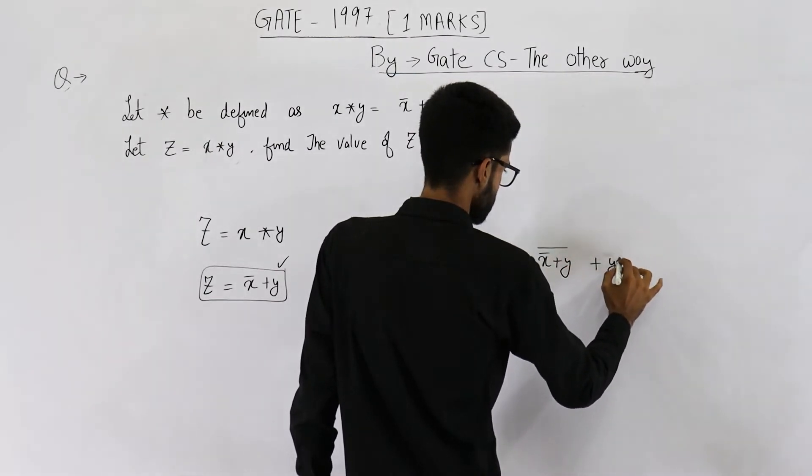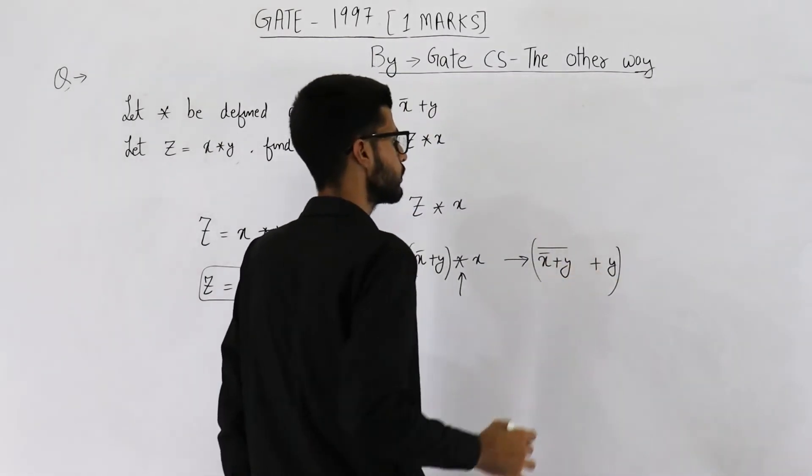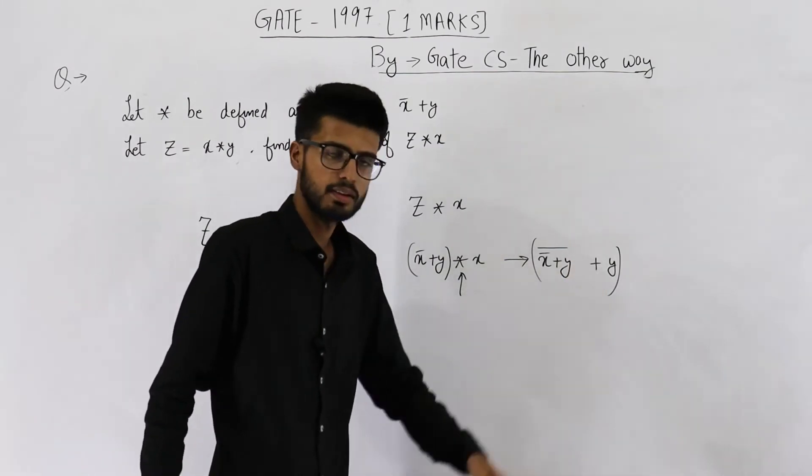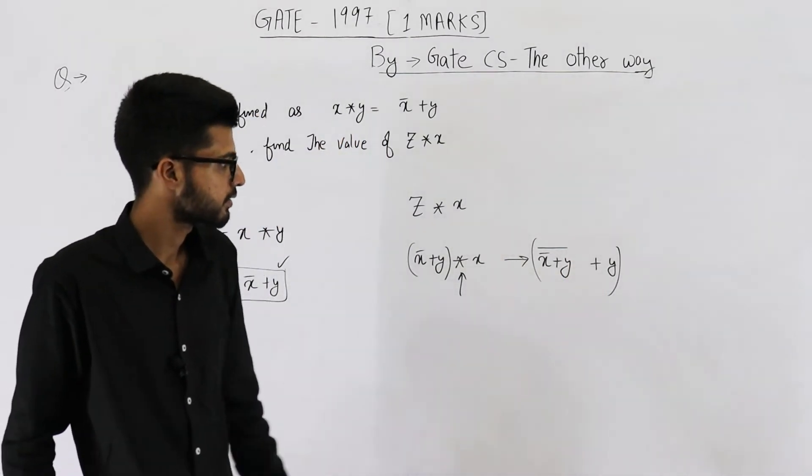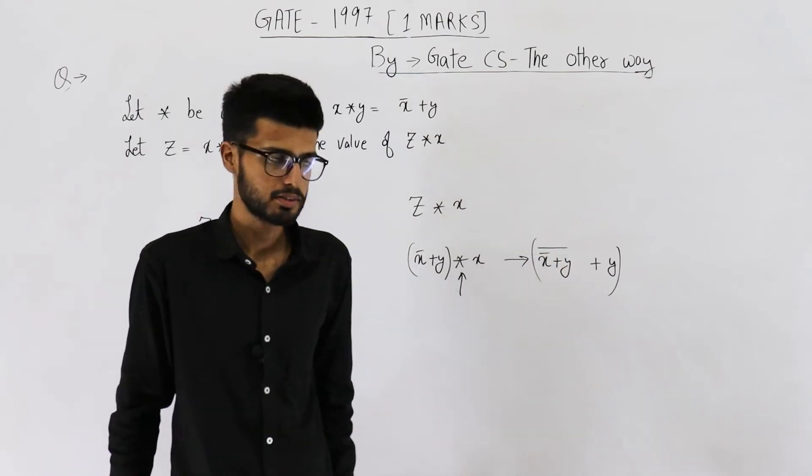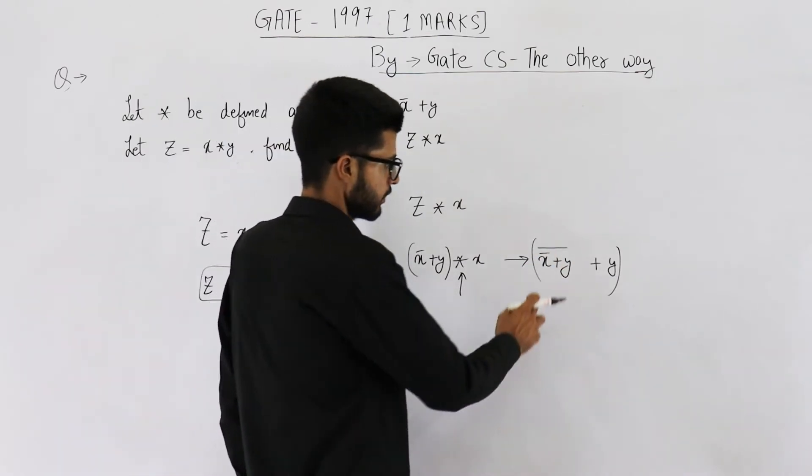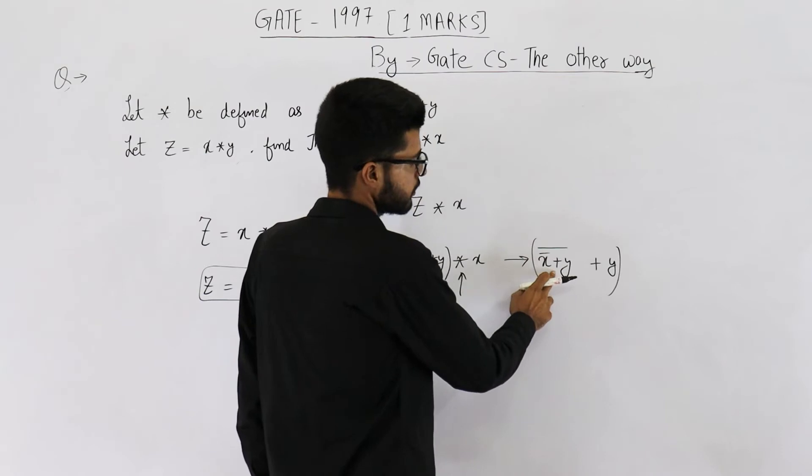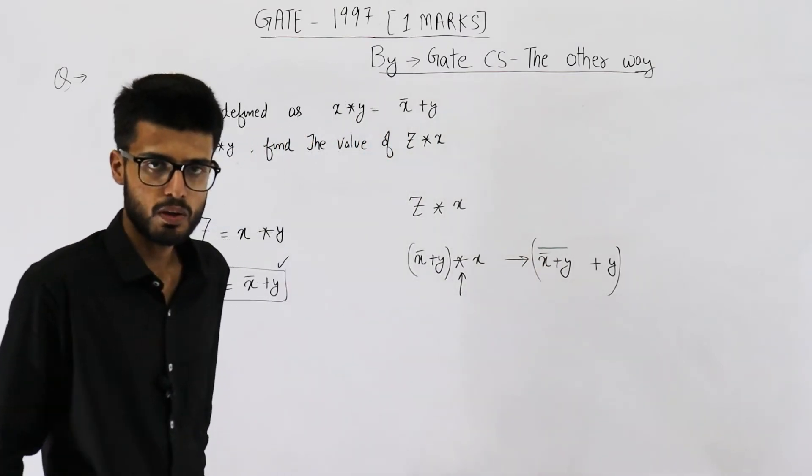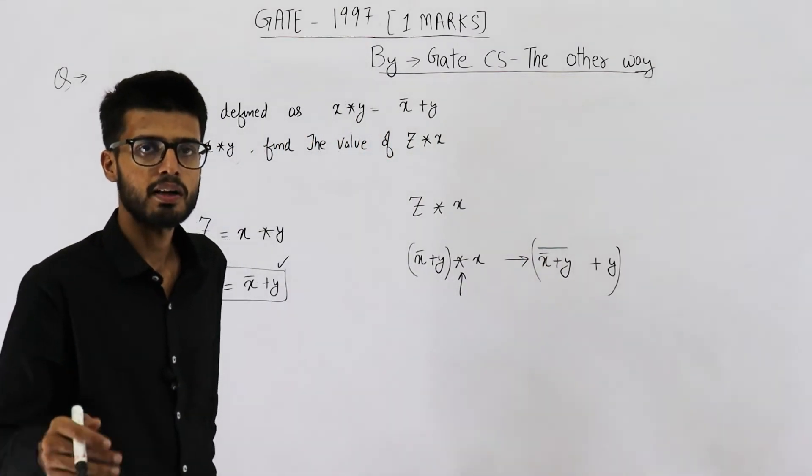This is the result. Let's solve it. For simplification of this expression you can apply De Morgan's law here. That means just convert this plus sign into a dot, or convert OR into AND, and split this complement.